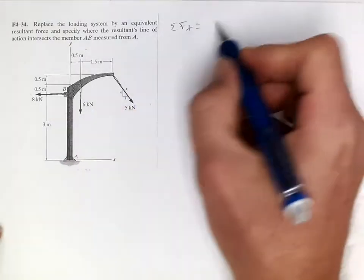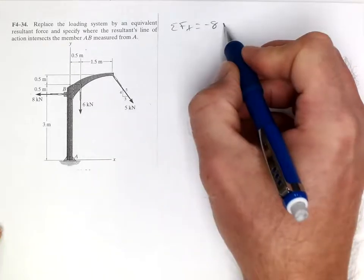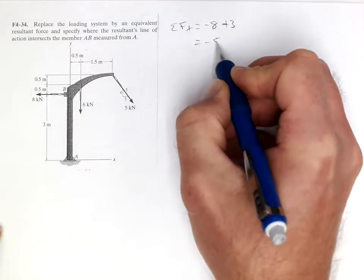We have negative 8, and this is a 3-4-5 triangle, so we have a positive 3. That equals negative 5 kilonewtons.